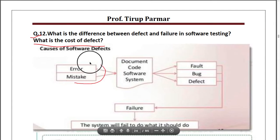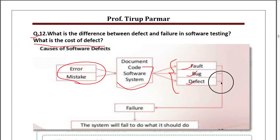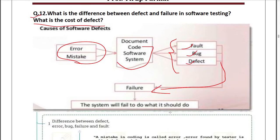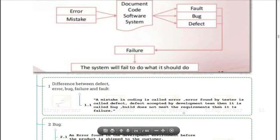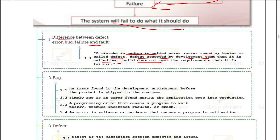In a simple diagram: errors and mistakes in code, document, or software system lead to fault, bug, or defect. If the defect remains in the software, it leads to failure of a process — the system will fail to do what it should do. A mistake in coding is called an error. An error found by a tester is called a defect. The same defect accepted by the development team is called a bug. We resolve the bug so that we do not get failure.